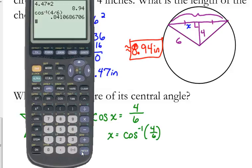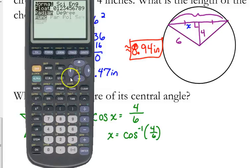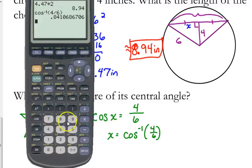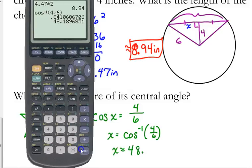So, oops. That answer doesn't make very much sense though, 0.84 degrees. That would be because my calculator is not in degrees. Let's try again. And that looks better. Okay, 48.19.